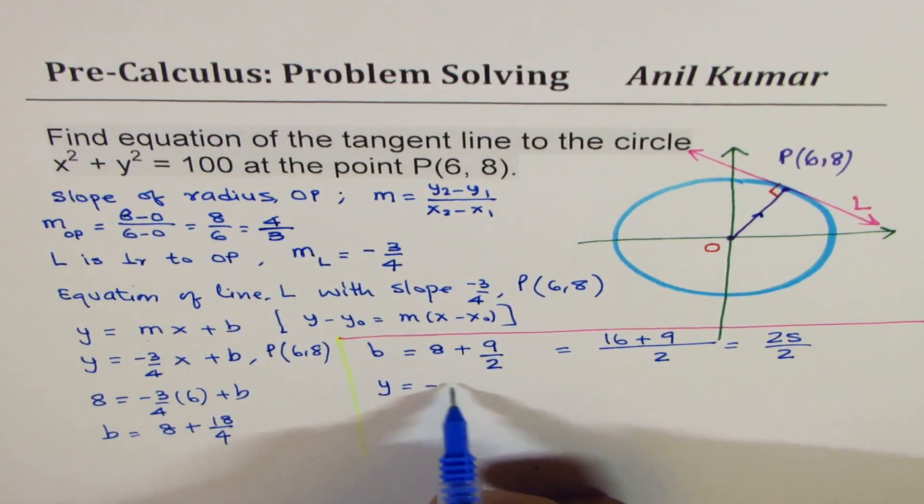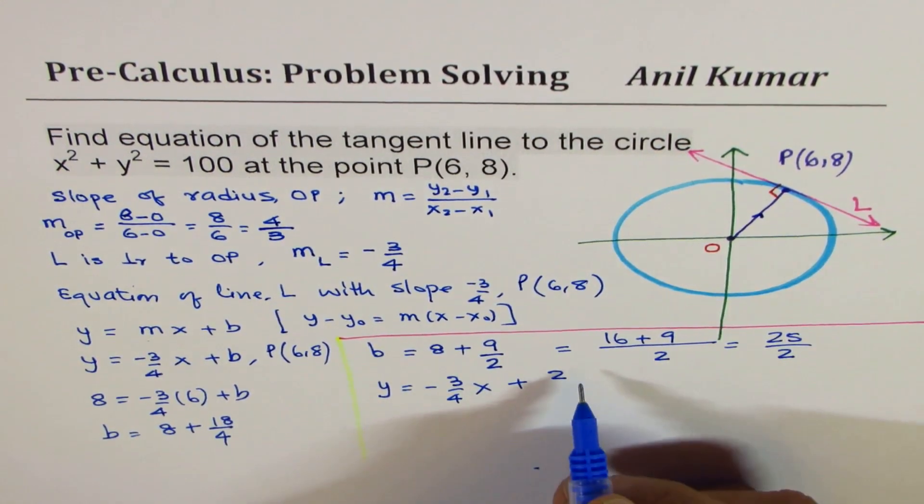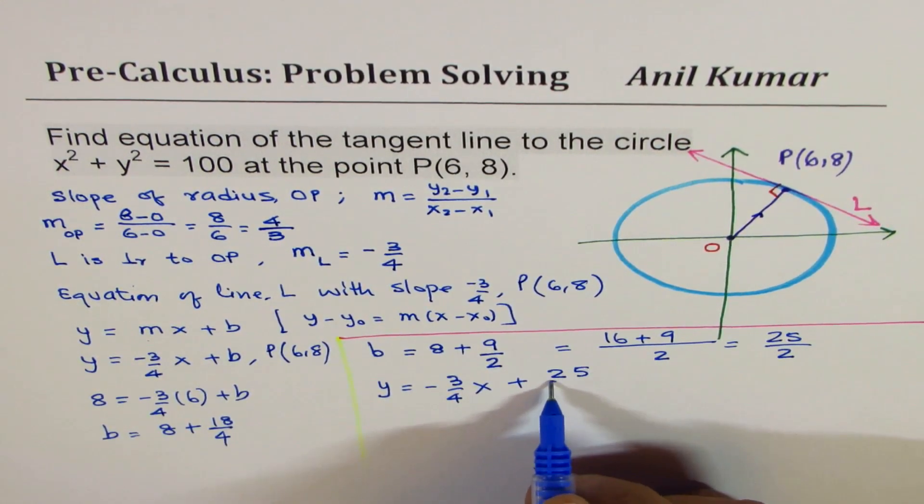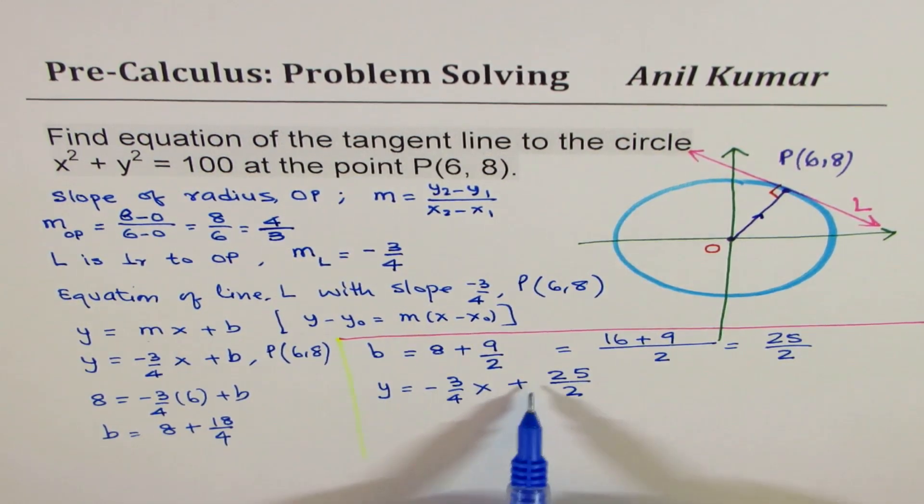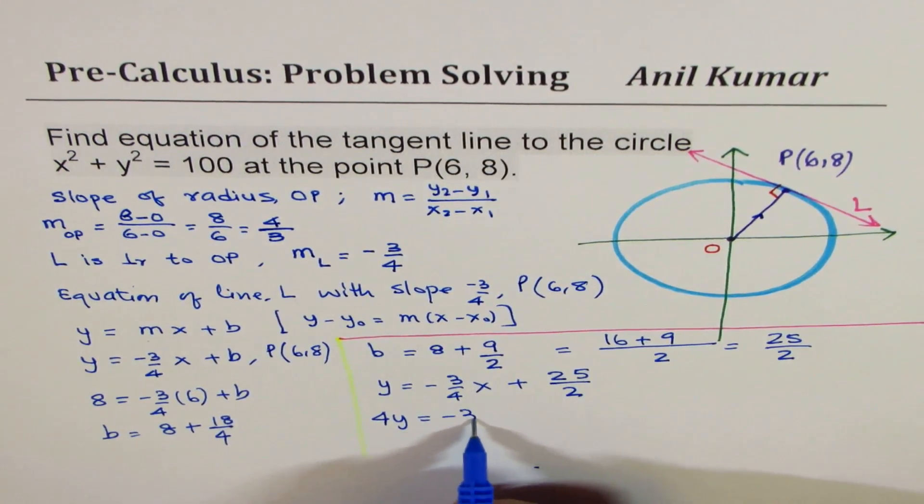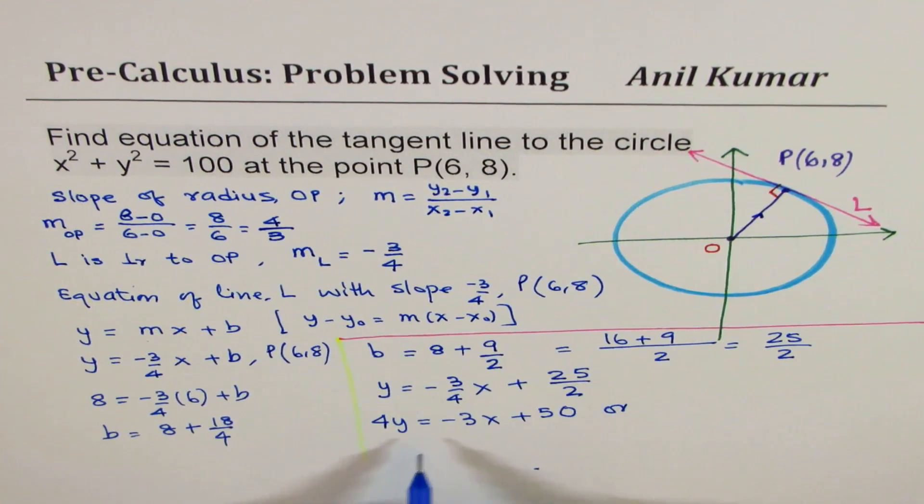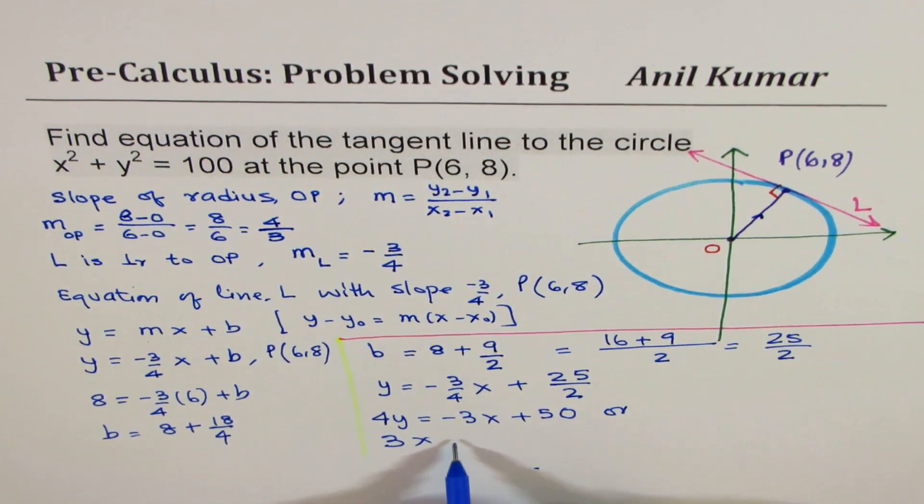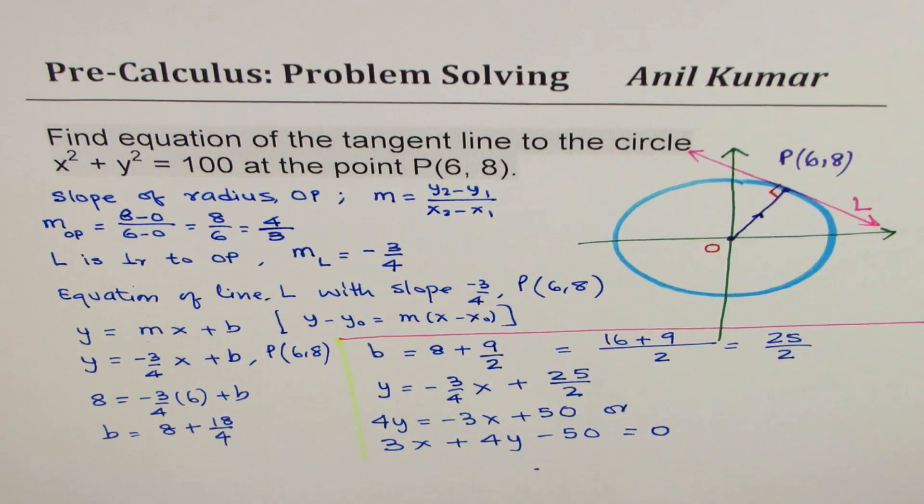We can write down y equals minus 3 over 4x plus 25 over 2. In case you want to write it in standard form, you can multiply all the terms by 4. So we get 4y equals minus 3x plus 50, or bringing them together, 3x plus 4y minus 50 equals 0. So that comes in standard form.